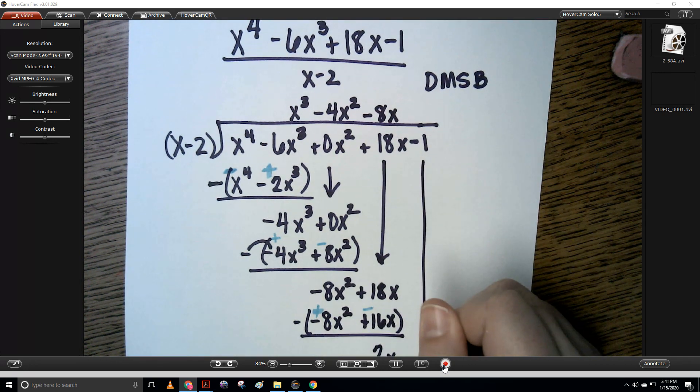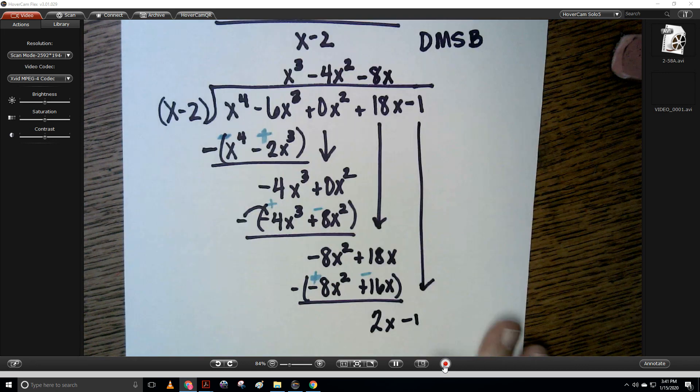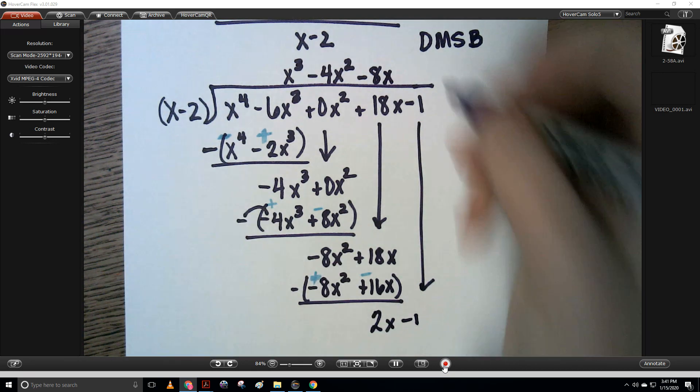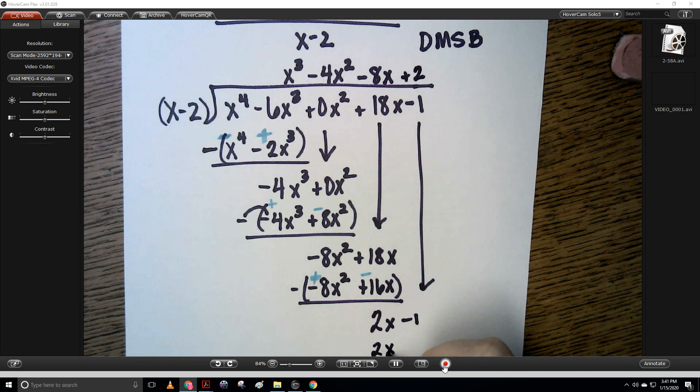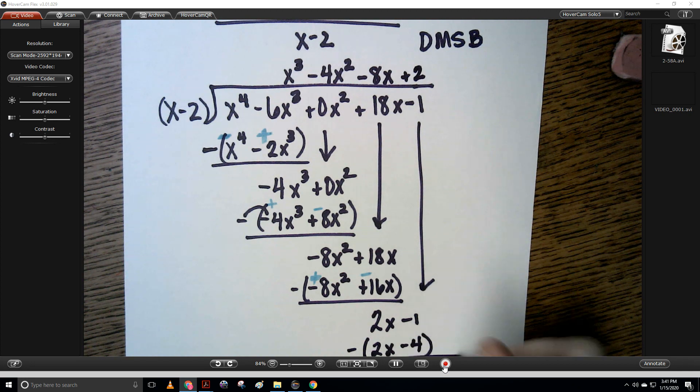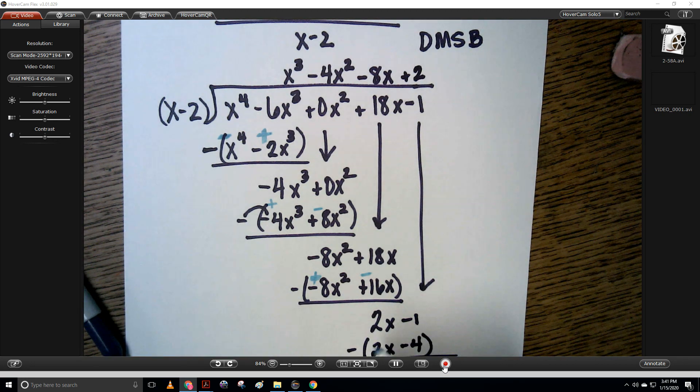And I'm going to bring down my minus 1. And so 2x divided by x is positive 2. Now I need to multiply 2x and minus 4. Distribute. That becomes a negative 2x, and that becomes a positive 4.